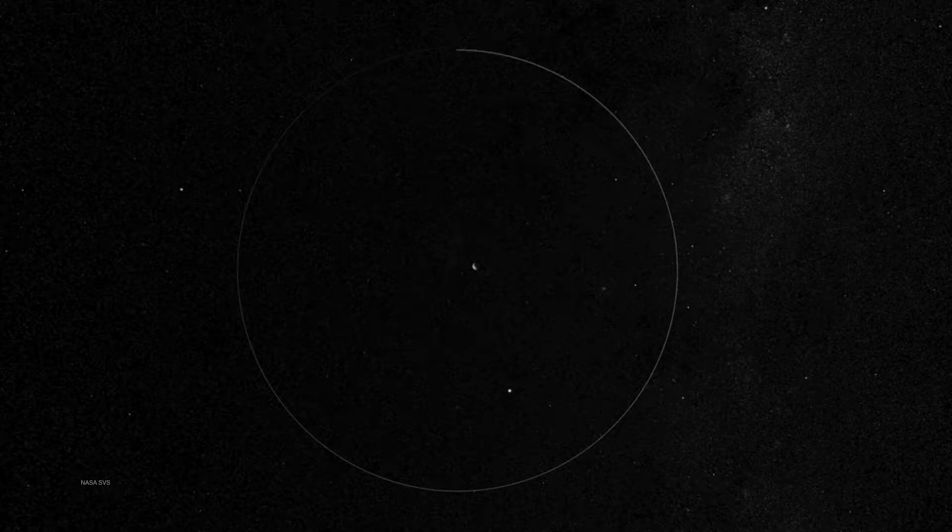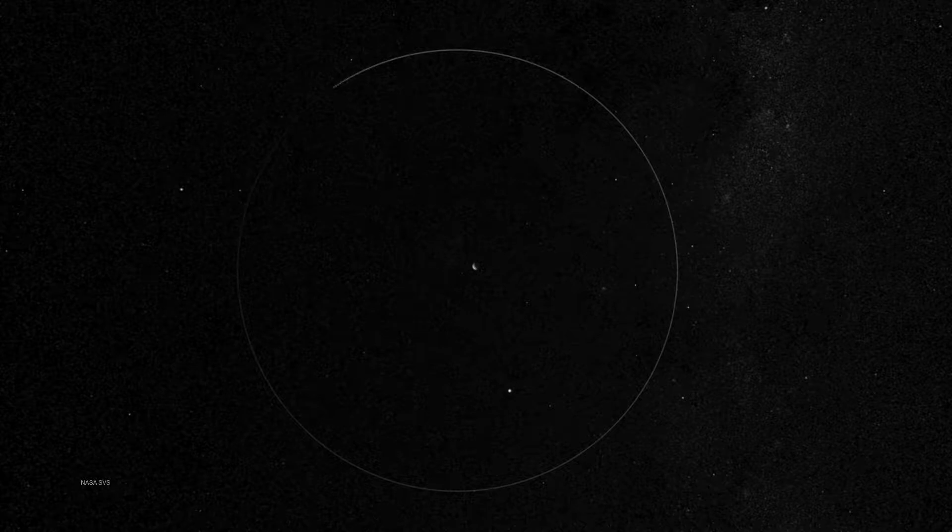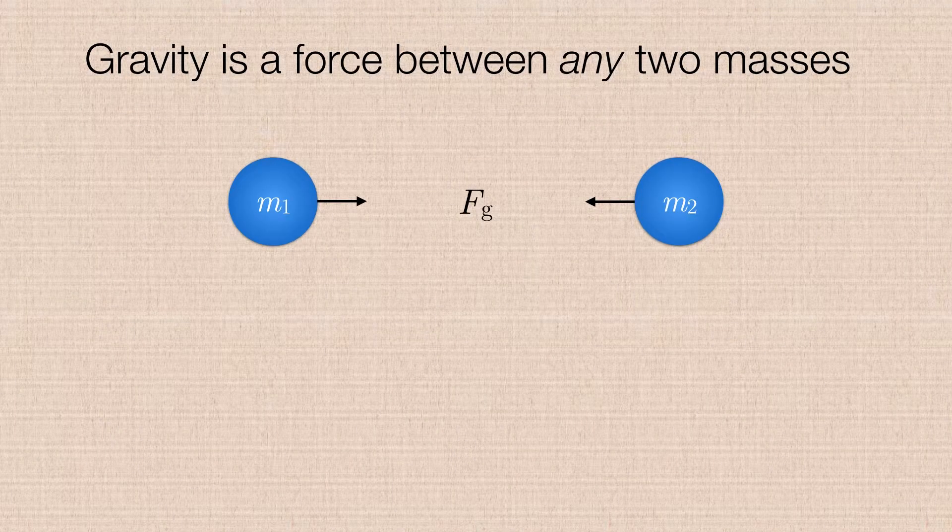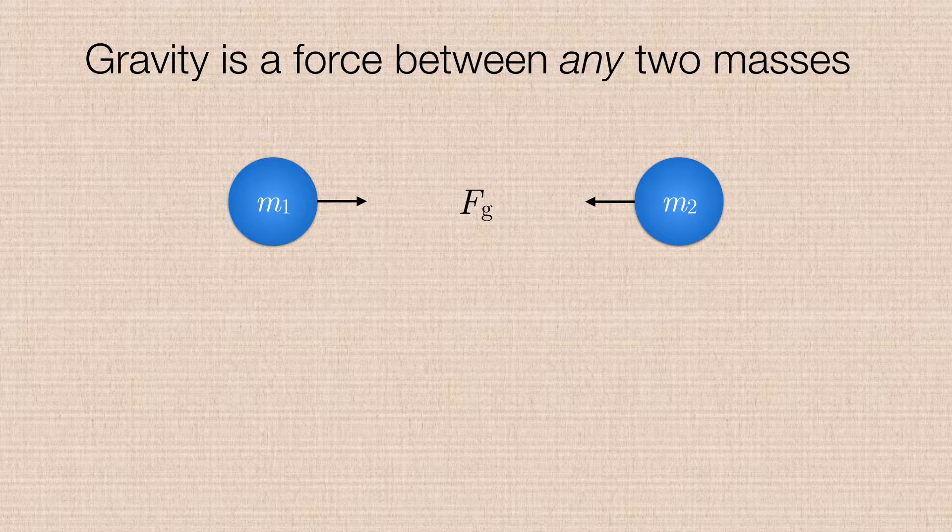And in order to understand Newton's universal law of gravitation, I think it's instructive to just kind of break it down and approach it in steps. So the first thing that Newton says is that the gravity is simply a force between any two masses. It could be an apple and earth, it could be the earth and moon, it could be a planet and the sun, it could be anything.